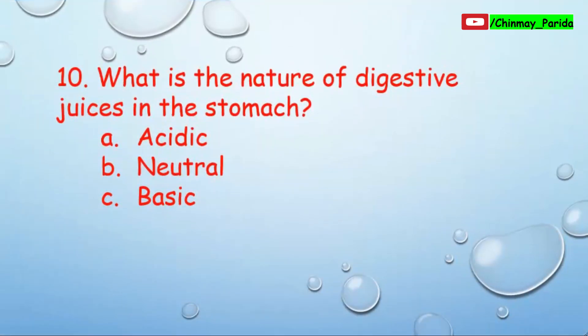Question number ten: What is the nature of digestive juices in our stomach? Option A: Acidic in nature, Option B: Neutral in nature, Option C: Basic in nature. The answer is Option A — digestive juices present in our stomach are acidic in nature.